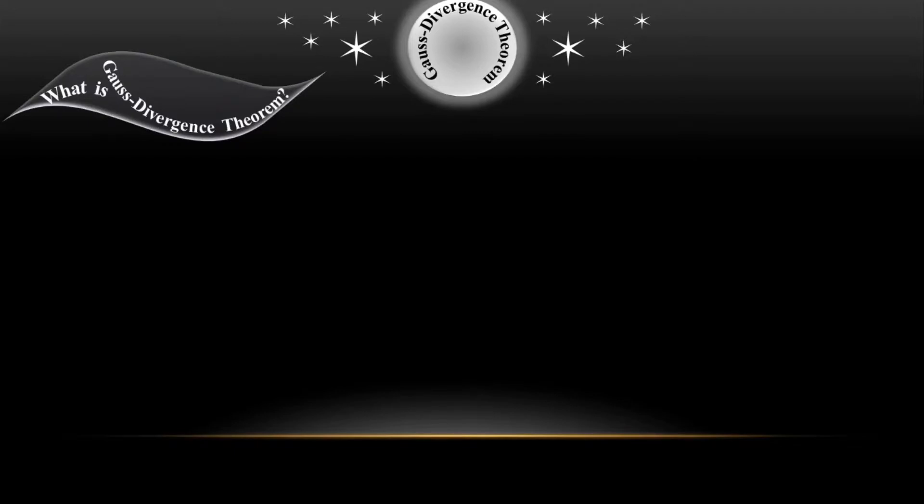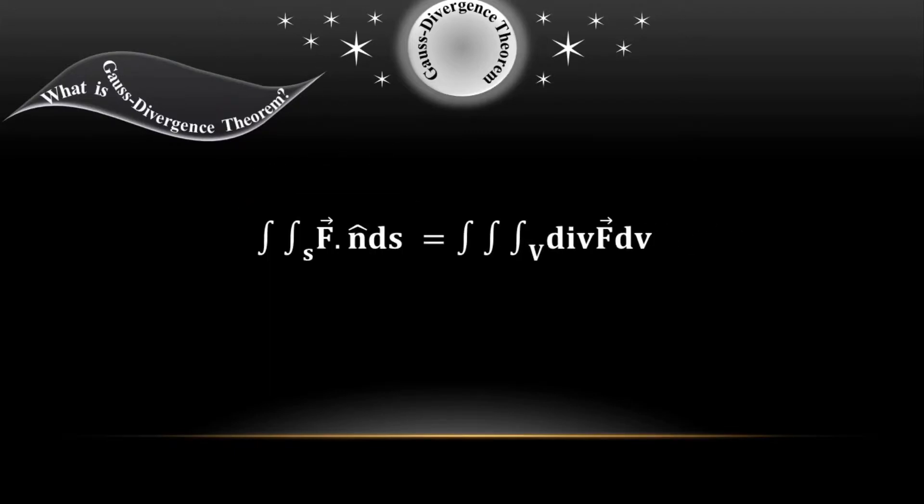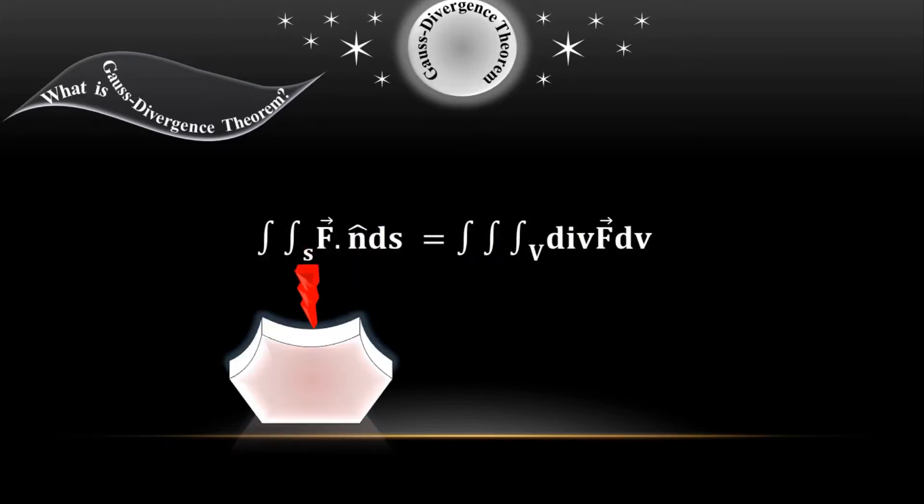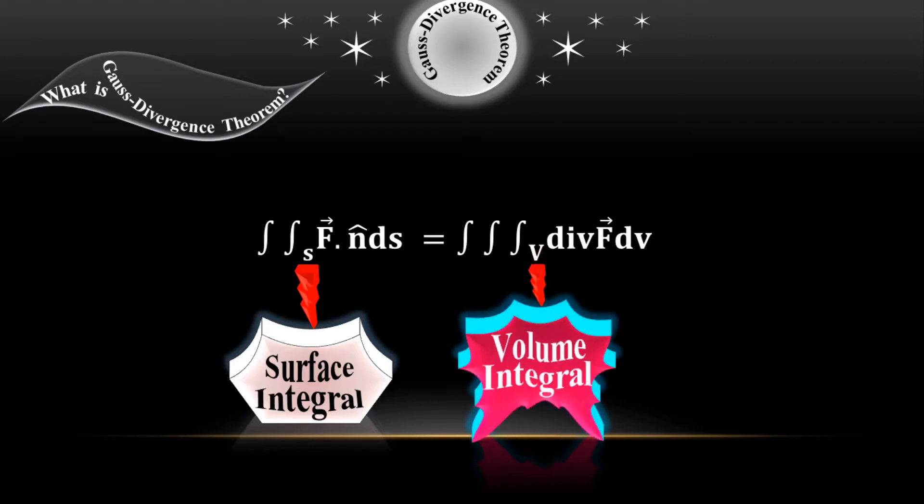The equation of Gauss Divergence Theorem is that surface integral equals to the volume integral. Left hand side equals to the right hand side, where S stands for the surface integral, which means that at the left hand side I'm going to take surface integration, and at the right side where V stands for volume integral, which means that volume integration will take place at the right side.